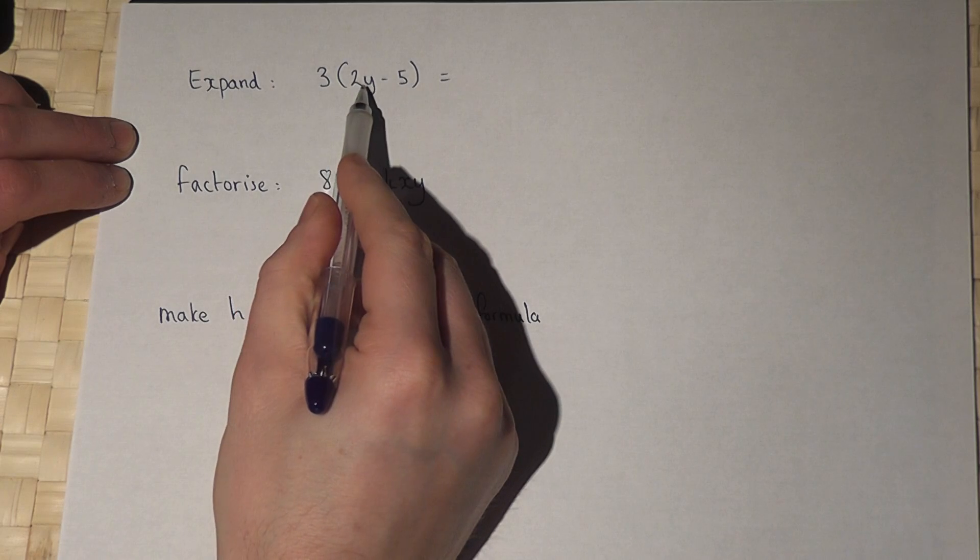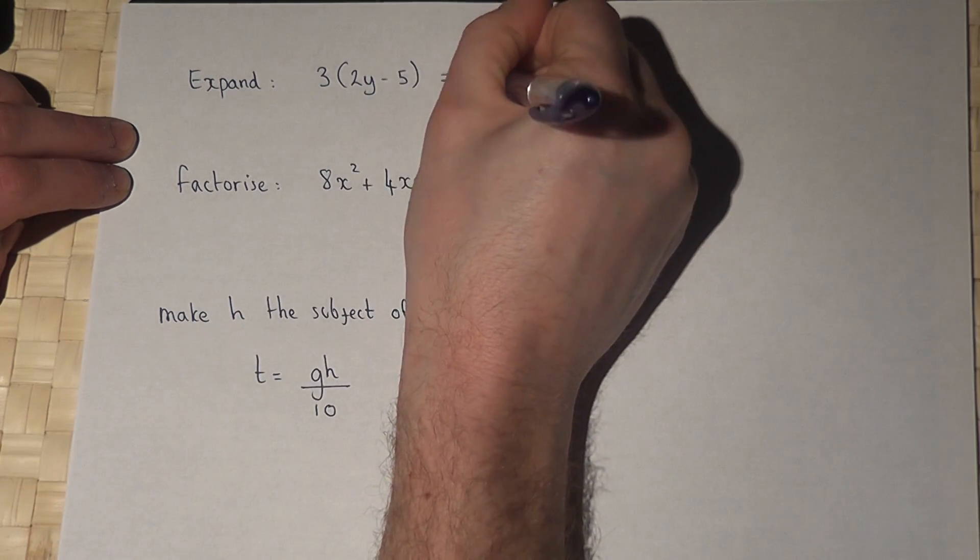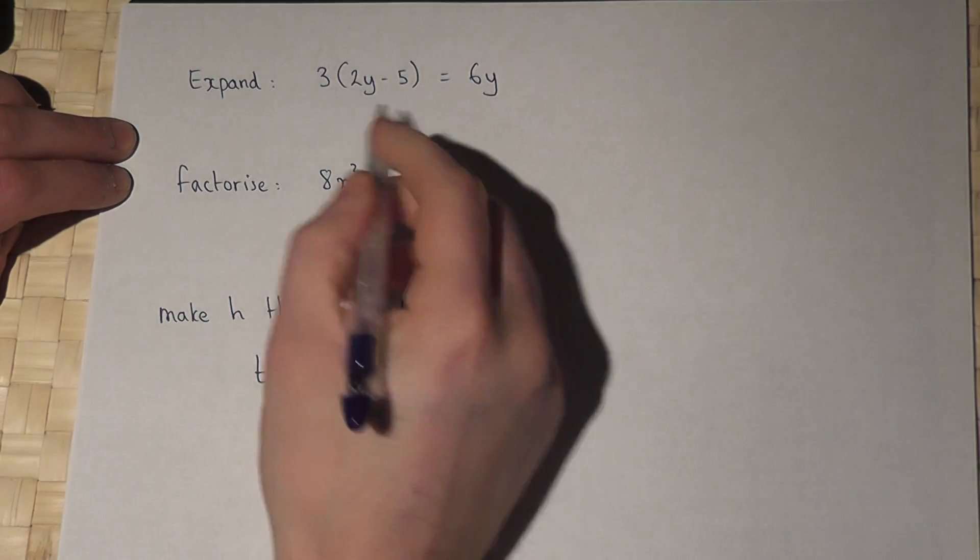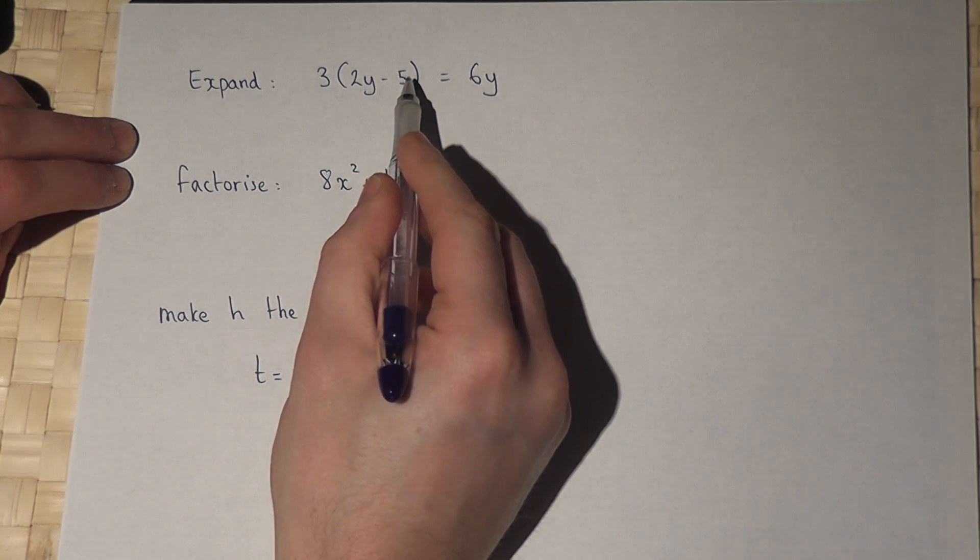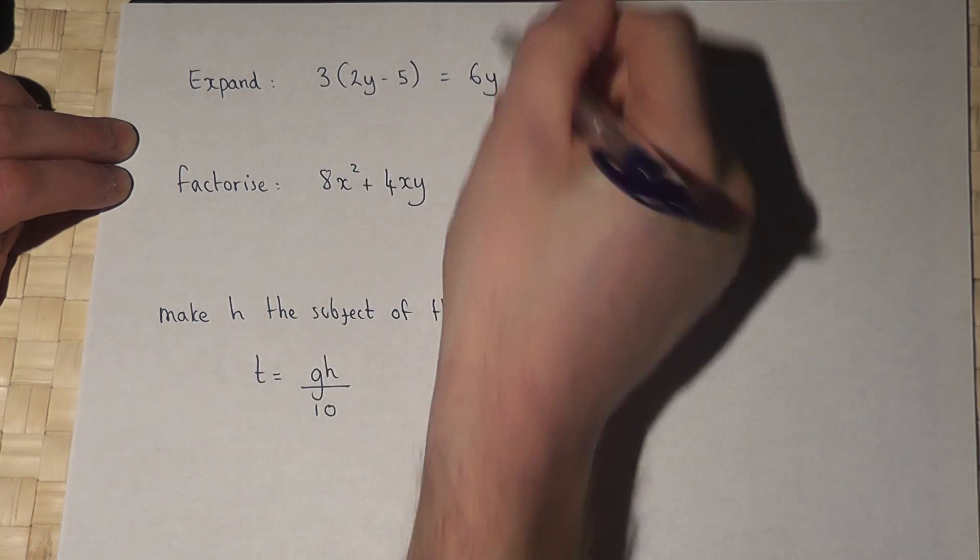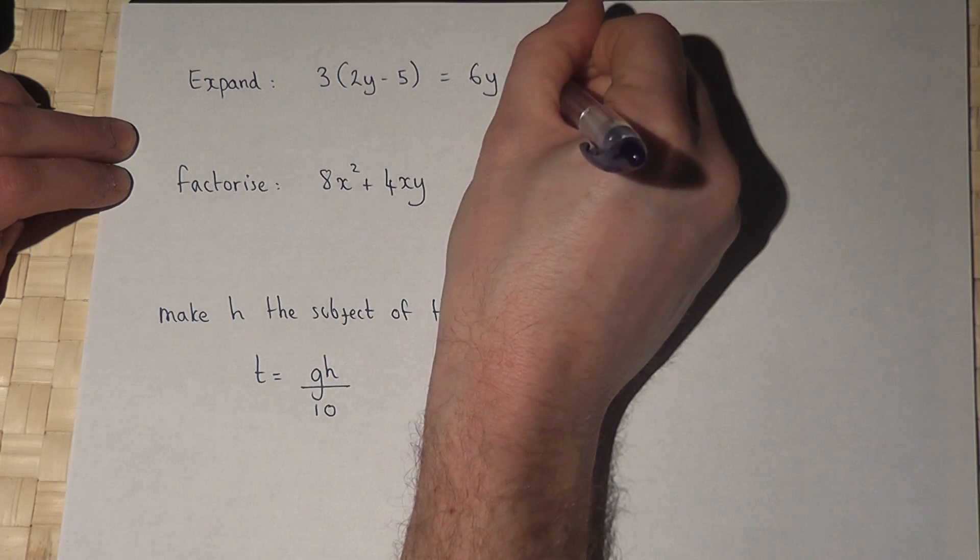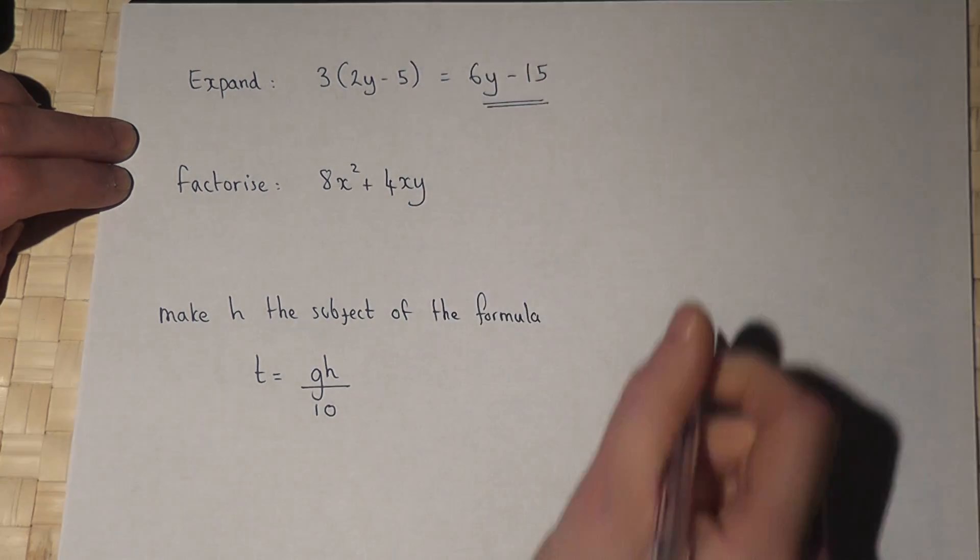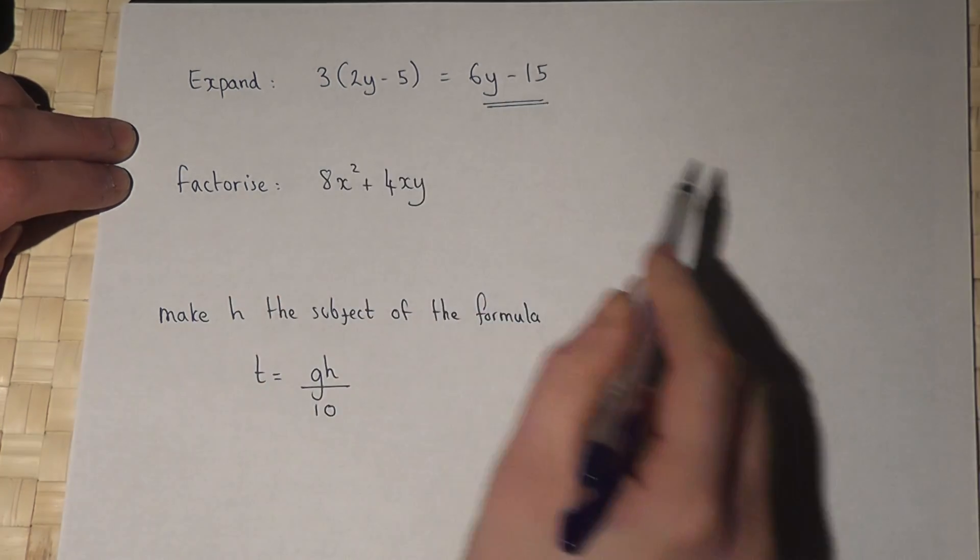So 3 times 2y just equals 6y. Now 3 times 5 is 15, so 3 times minus 5 is minus 15. So this is the expansion of the given bracket.